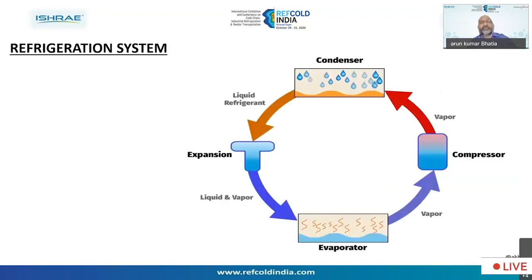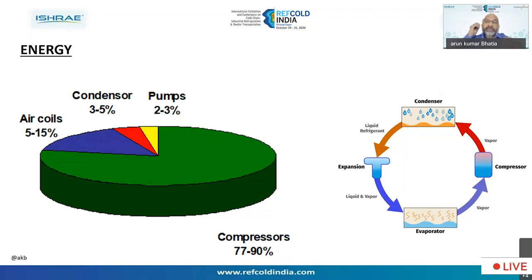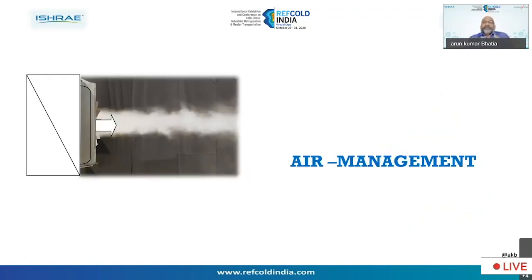In a normal vapor compression refrigeration system, we have a condenser, compressor, evaporator, and expansion valve. If I have to analyze the system, the main energy stakeholders are: compressors, which consume most of the energy, and coils — air coolers or air cooling coils — which also consume a lot of energy. Our focus today is to understand how we can reduce or optimize energy, and to show there is real scope to save energy.